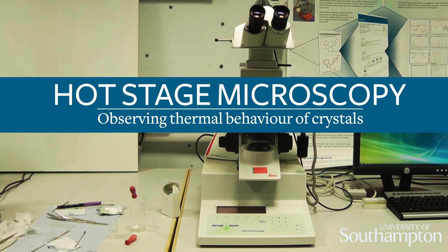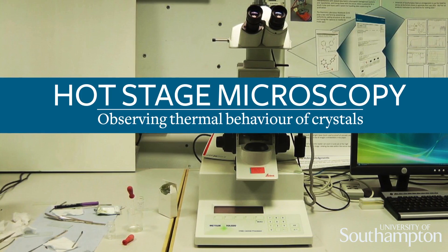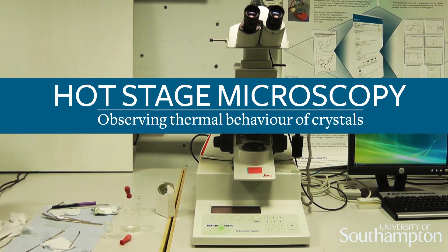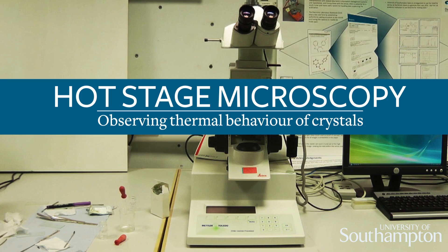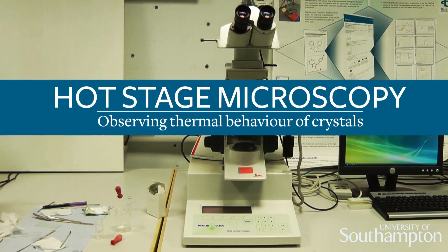Hot stage microscopy is an analytical method for visually recording changes when a sample is heated or cooled. It is particularly used in studying liquid crystals, but here we are using it to observe whether the sample changes form before reaching its melting point.